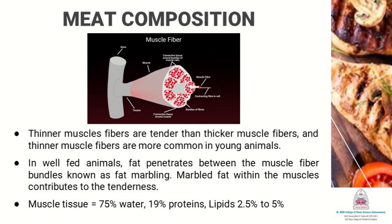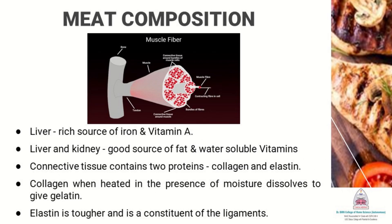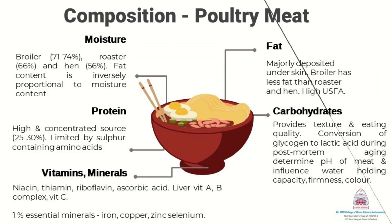This marbled fat within the muscles contributes to the tenderness of the meat. Muscle tissues are made up of 75% water, 19% proteins and 2.5–5% of lipids. Muscle tissues of the liver are considered to be a rich source of iron and vitamin A. Muscle tissues of liver and kidneys are a good source of fat and water-soluble vitamins. Connective tissues are made up of two proteins: collagen and elastin. Collagen, when heated in the presence of moisture, dissolves to give gelatin. Elastin is a tougher material and is a constituent of the ligaments.